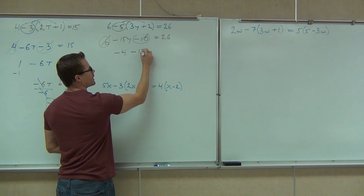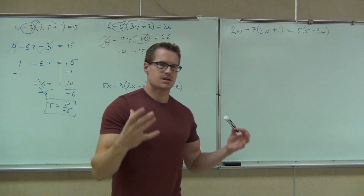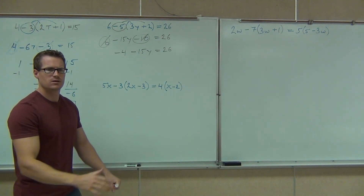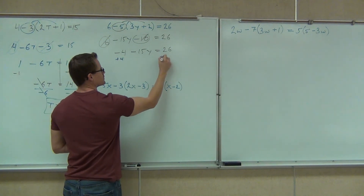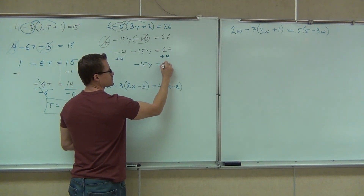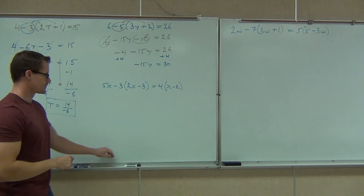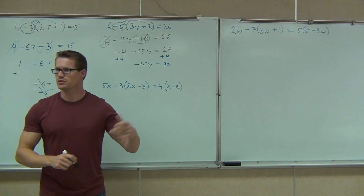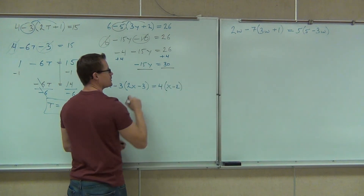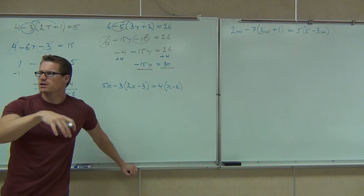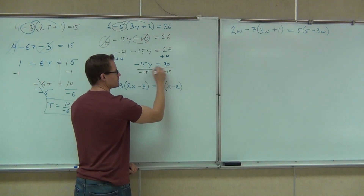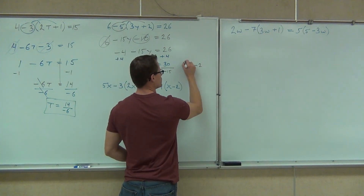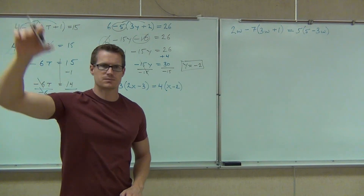Now we're going to combine like terms and keep simplifying until we get no like terms left on either side. We have a 6 and a minus 10 — that gives me negative 4. So negative 4 minus 15y equals 26. Everything's combined, no more like terms. Now it's time to solve for y. Get rid of the constant term first — that's negative 4 — so add 4 to both sides. That gives us negative 15y equals 30. Then divide by negative 15 on both sides. Y equals 30 divided by negative 15, which is negative 2.